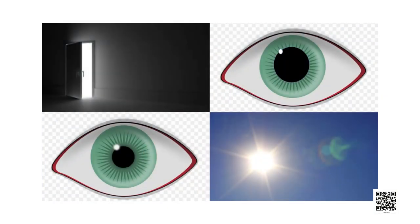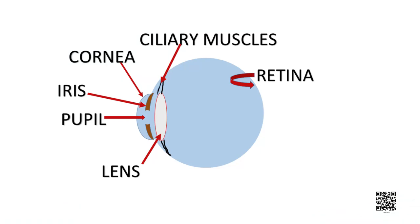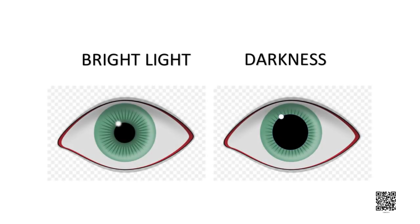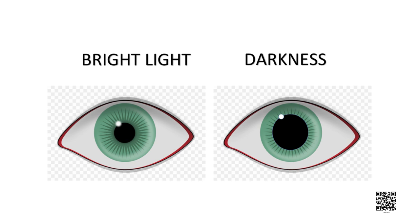The size of the pupil is controlled by the iris. In darkness, the pupil becomes large so that maximum light enters, and in bright light the pupil becomes small so that less light enters. Just behind the cornea is the iris, which is a dark muscular diaphragm that controls the size of the pupil.